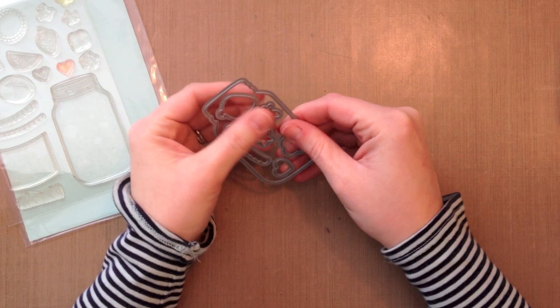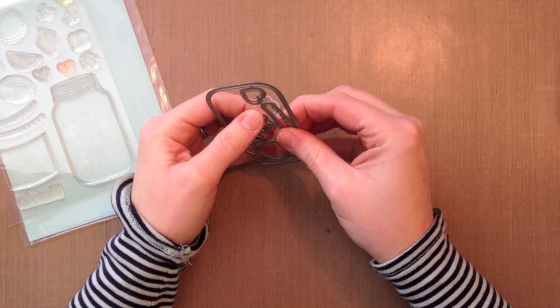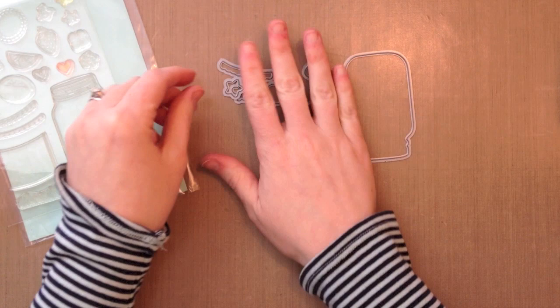All you have to do is kind of bend them back and forth and they'll come apart. You can also use wire cutters or those Tim Holtz Tonic scissors, but they come apart pretty easily. As you can see I'm doing here, I'm going to take them all apart. So there's all my pieces and I'm going to move those out of the way for now.